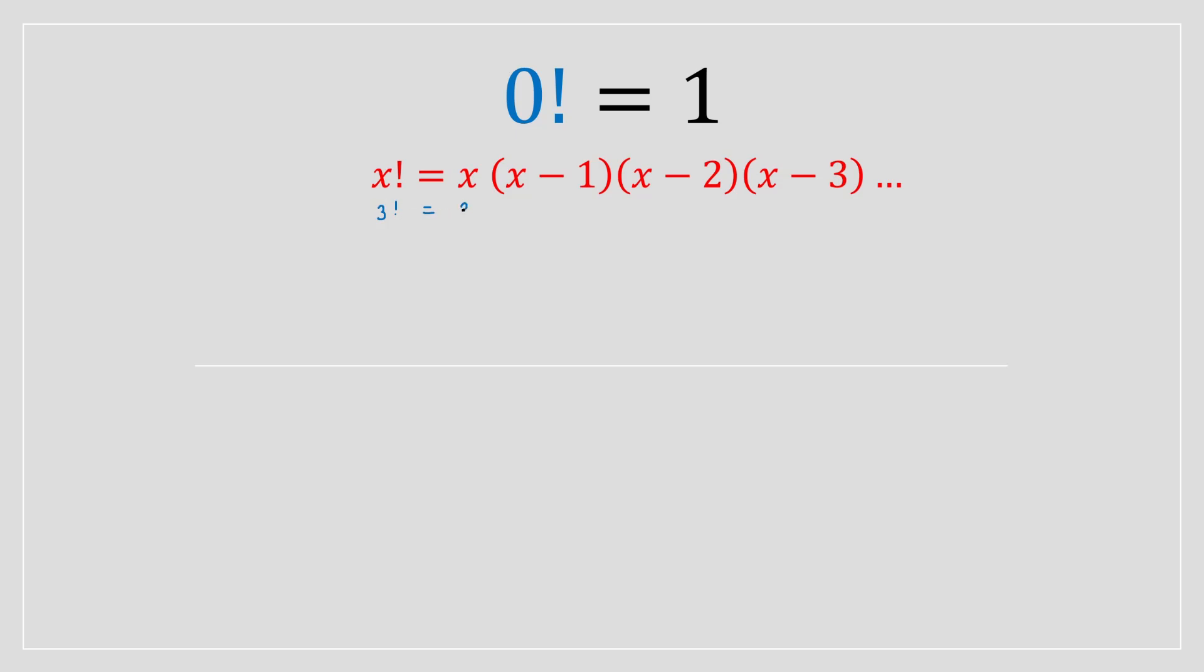So your x is 3, so this is going to be 3. Then you would do 3 minus 1, multiply by 3 minus 2. And obviously you're going to stop over here because afterwards you're just going to hit a 0.